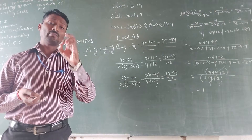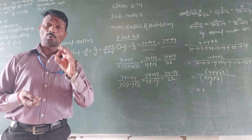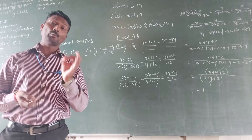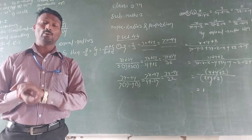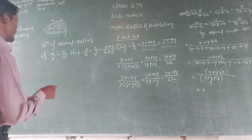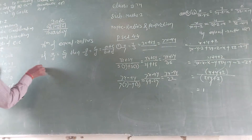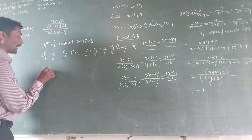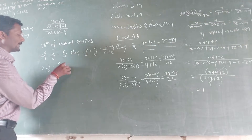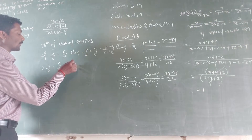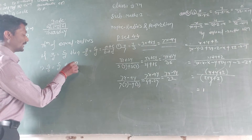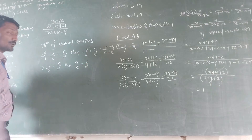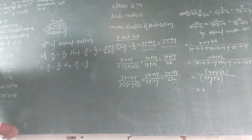The operations from the given ratio — that is invertendo. If a upon b is equal to c upon d, the invertendo formula is that a upon c is equal to b upon d.